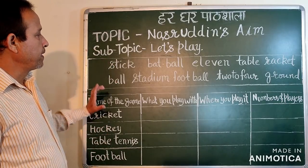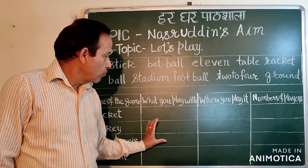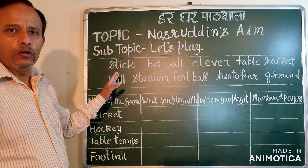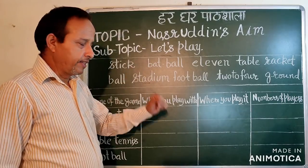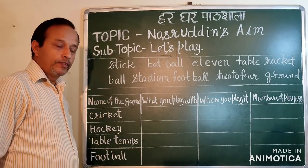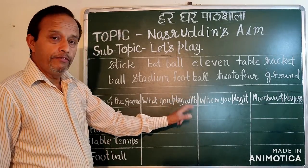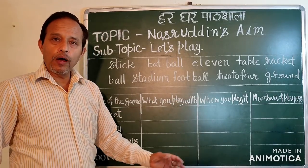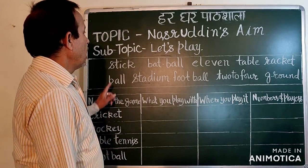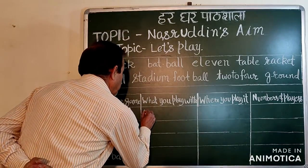We need to fill in one word here. We need to fill all the titles. If you want to fill one word, you can also use it two times. Let's start. First: Cricket. The first title is what you play with in cricket. What do you play with? Bat. We have a bat and ball.